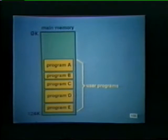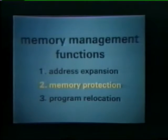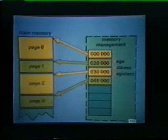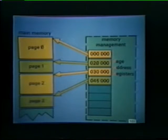However, when several programs are resident in memory, it is often necessary to protect these programs from unauthorized access or modification. The memory management unit provides the hardware facilities that are required for memory protection. To accomplish this, main memory is first divided into smaller segments called pages. The starting address of each page is established using a set of registers contained in the memory management unit. These registers are referred to as the page address registers, or PARs.